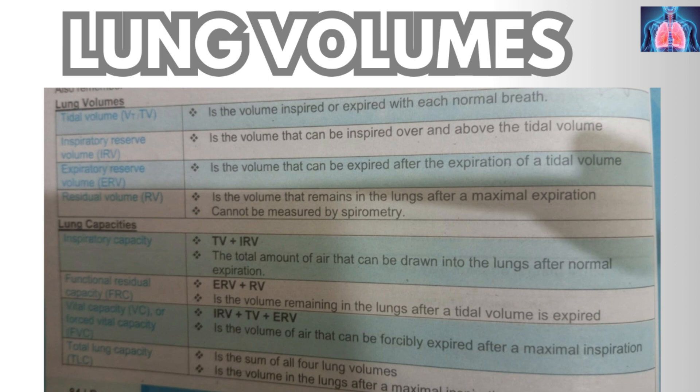The vital capacity is the sum of the tidal volume, the inspiratory reserve volume, and the expiratory reserve volume — it is the volume of air that can be forcefully expired after a maximal inspiration. The residual volume is not included in the vital capacity. The total lung capacity is the sum of all four lung volumes — the volume in the lungs after a maximum inspiration. These are key concepts you must know about respiratory physiology.